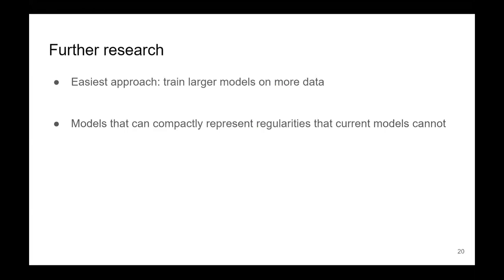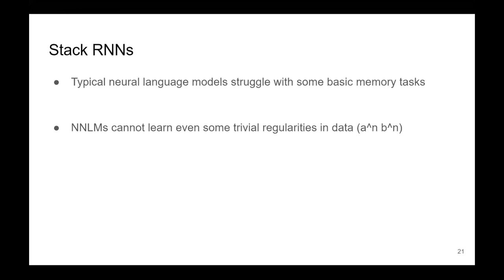That's a big question and I'll present a couple of ideas I'm approaching myself. The easiest approach to get better results is to train larger models on more data, which seems to be a never-ending story. But back to the learning limitations — there are actually some very simple tasks we can define. We can construct data algorithmically that contains regularities that typical neural network models don't really learn to capture.